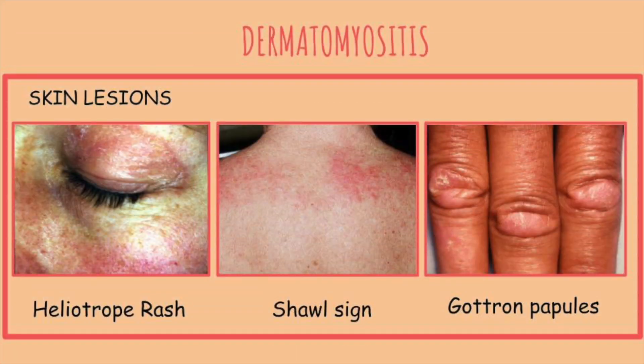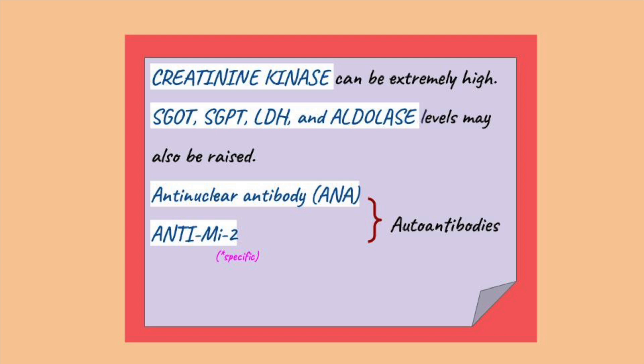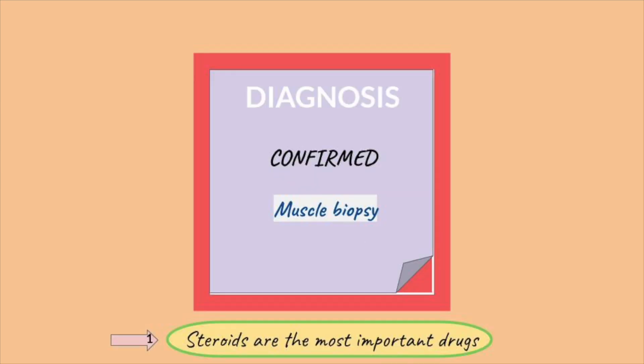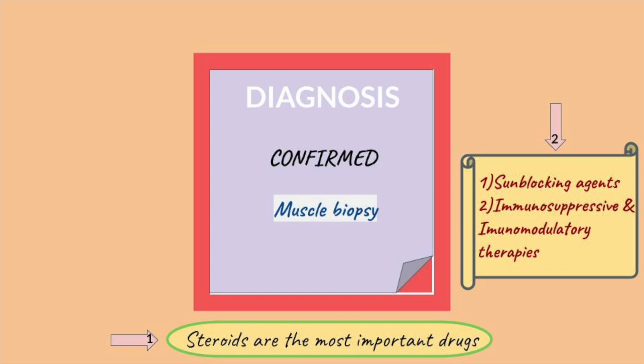Coming on to dermatomyositis, features are similar to polymyositis except for the characteristic presence of skin lesions — such as heliotrope rash present over the eyelids, Gottron's papules present as patches over the extensor surfaces of joints, and shawl sign as a rash around the neck. The investigatory findings include the presence of anti-nuclear antibodies. Steroids are again the mainstay of treatment, while sun-blocking agents can be used for skin lesions.